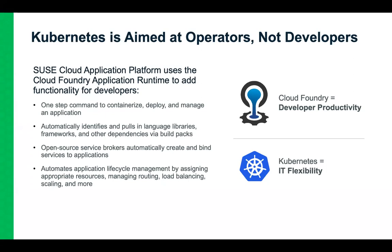That's why SUSE Cloud Application Platform chose to use the Cloud Foundry application runtime to add functionality for developers on top of Kubernetes. It's a 100% open source project that containerizes the Cloud Foundry application runtime and runs it inside any Kubernetes distribution — no virtual machines involved, and no BOSH. Developers can containerize, deploy, run, and manage an application using a single CF push command from the CLI, or by specifying a Git repo in the UI.